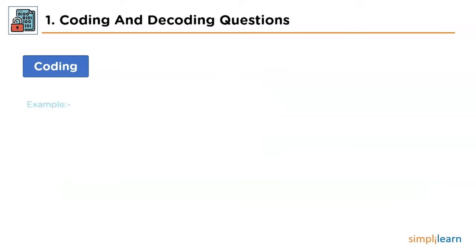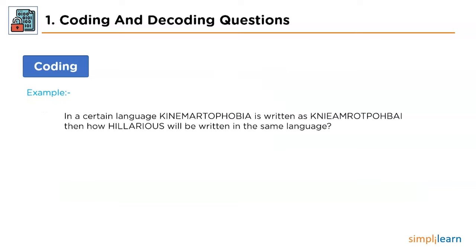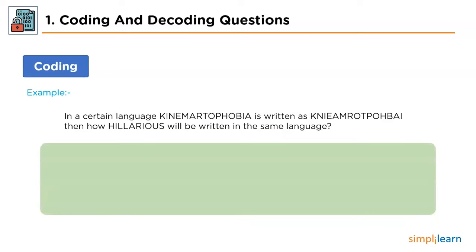Let's have a look at an example to comprehend this better. The problem statement states that in a certain language, 'kinomotophobia' is written as K-N-I-E-A-M-R-O-T-P-O-H-B-A-I. Then how will 'hilarious' be written in the same language? The logic to answer this question is engraved in the conversion of 'kinomotophobia' to that coded form.